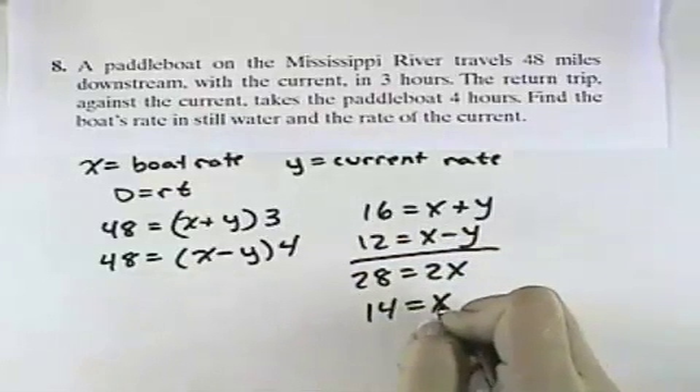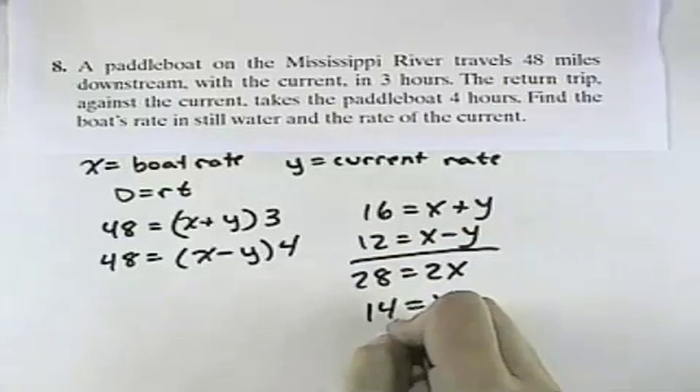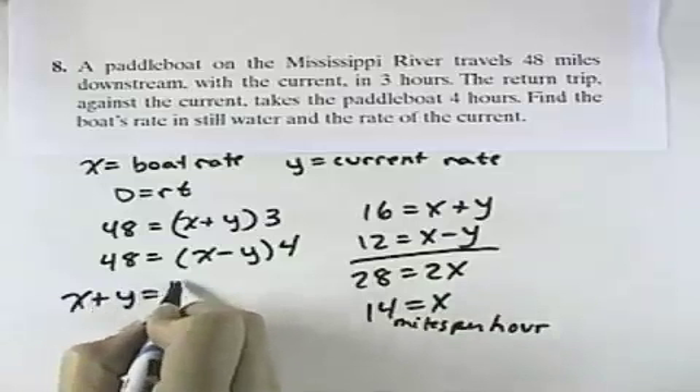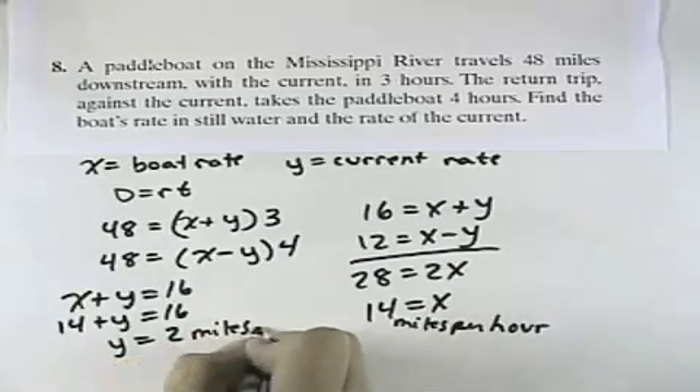That means the boat's rate in still water was 14 miles per hour. But now solving for y, going back to either of the original equations, such as x plus y equals 16, I can see x is 14 plus y equals 16, so subtracting 14, I'll see y is 2 miles per hour for the current.